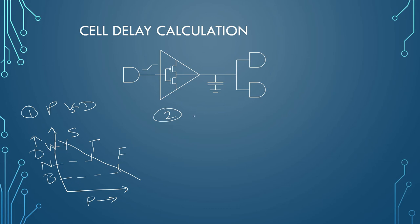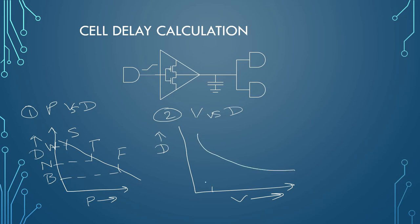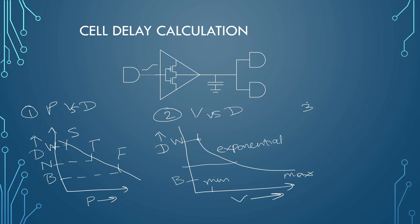For delay versus voltage: on the x-axis we plot voltage and on the y-axis we plot delay. At minimum voltage, delay is very high — that is worst delay. As you keep on increasing the voltage, your delay decreases exponentially. So the relationship of change of voltage with respect to delay is exponential.